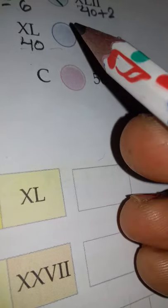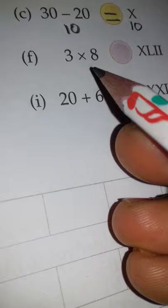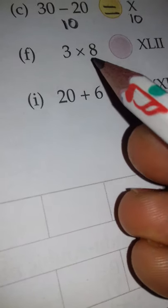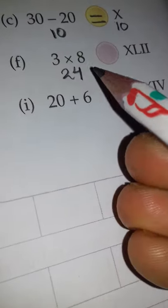Part (f): Here the numbers are given in multiplication, so we will multiply 3 into 8, which is 24. The other side is given as XLII - XL means 40, II means 2, so 42. Here 24, other side 42, so this side is greater: XLII, 42.